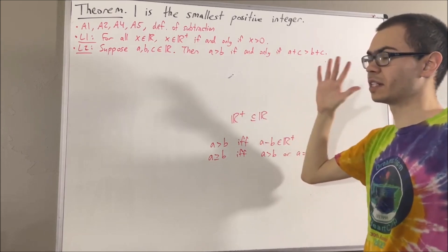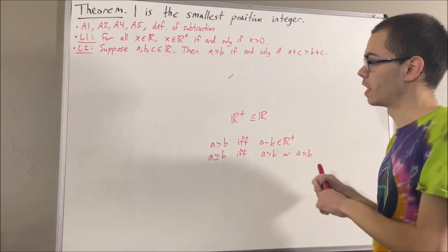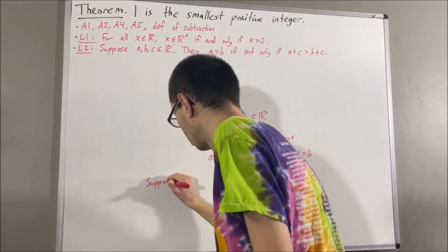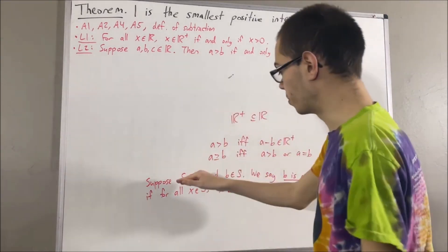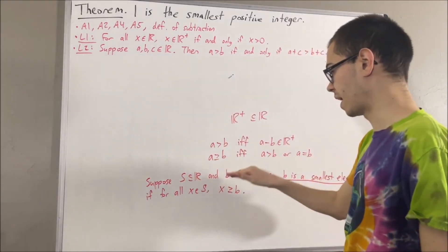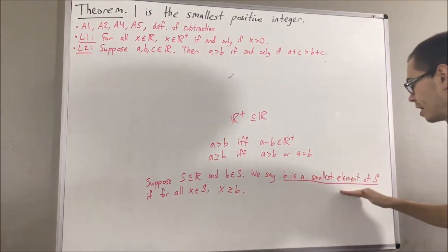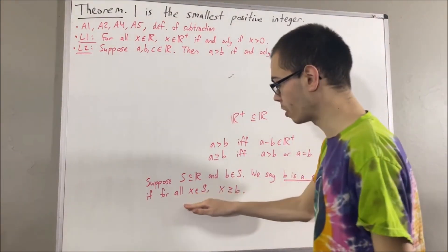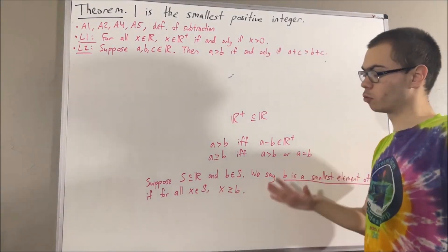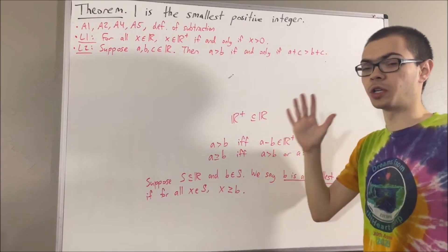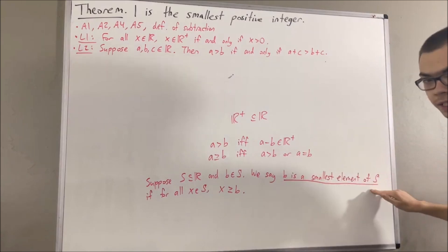We have also defined the notion of the smallest element of a set of real numbers. Suppose S is a subset of real numbers and b is an element of S. We say b is a smallest element of S if for all x in S, x is greater than or equal to b. In fact, we have shown that smallest elements are unique, so in this case b is the smallest element of S.